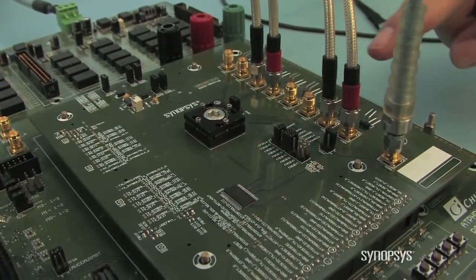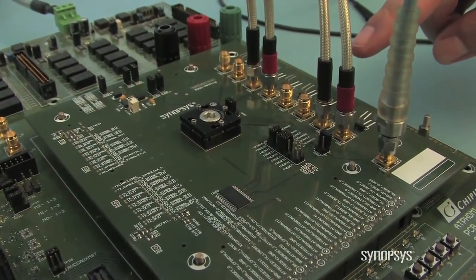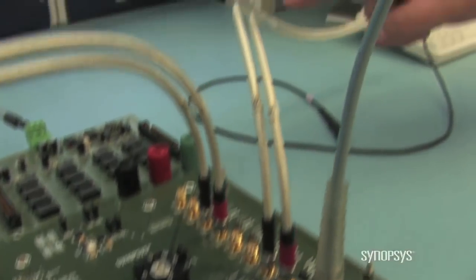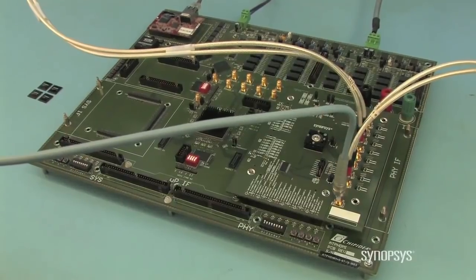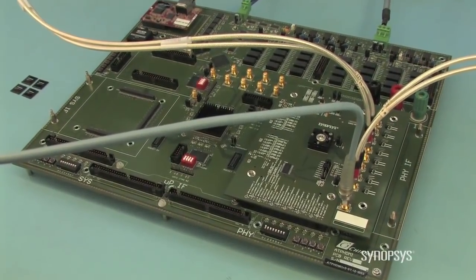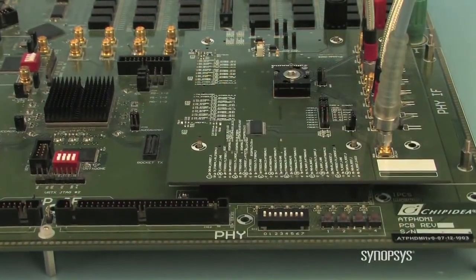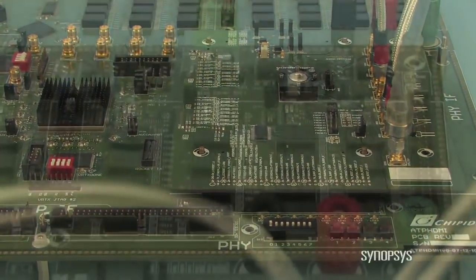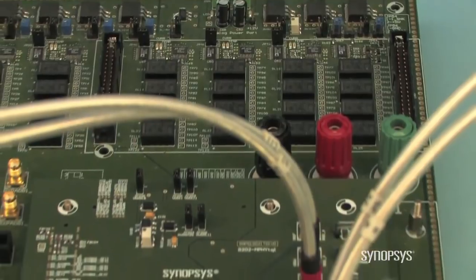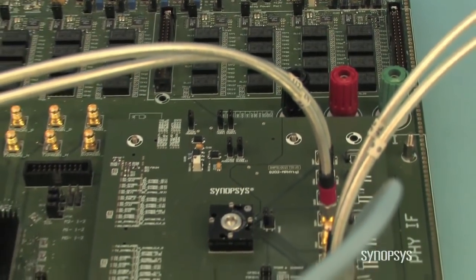The M-PHY daughter card is connected via SMA connectors to the measurement equipment where I will be showing the electrical results. The M-PHY test chip contains the Synopsys DesignWare M-PHY IP in a high-speed Gear 1 implementation with two receive lines and one transmit line. This implementation delivers optimized power and throughput performance common in baseband LTE applications.